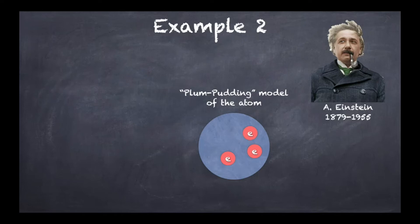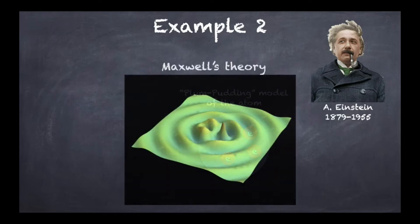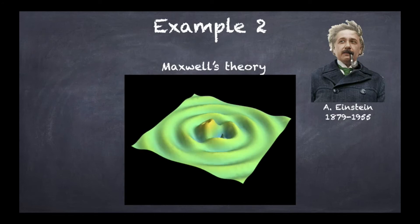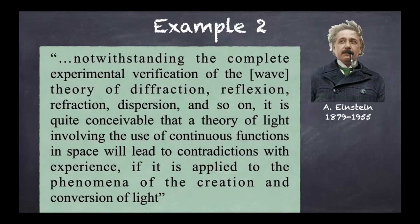Now the problem with this picture is that although it seems to be able to explain this very specific phenomenon, it turned out that it was in total contradiction with Maxwell's wave theory of light, which stated that light was an electromagnetic wave. In fact, Einstein himself says in the paper, 'notwithstanding the complete experimental verification of the wave theory of diffraction, reflection, refraction, dispersion and so on, it is quite conceivable that the theory of light involving the use of continuous function in space will lead to contradictions with experience if it is applied to the phenomena of the creation and conversion of light.'